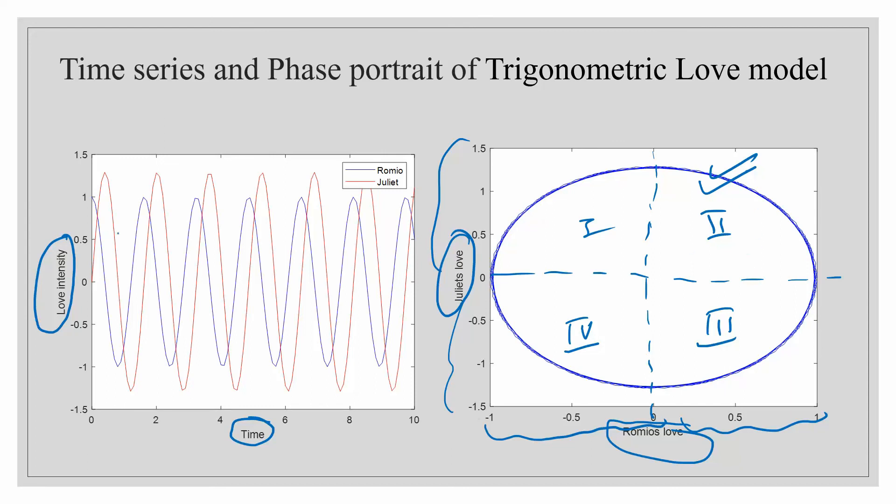So here also the time series represents the same thing that you can see that how the cycle of the feelings is going on and you can say that only for a quarter period of time they will love each other. So this was a simple MATLAB code for both Lotka Volterra model and a simple love model which was given by Strogatz.